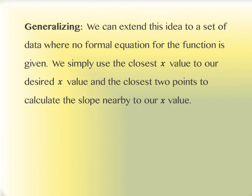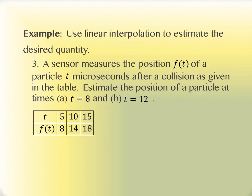Generalizing, we can extend this idea to a set of data where no formal equation for a function is given. In the last two examples we actually had a function — sin(x) or √x. We can do this for a table of values as well; this is called linear interpolation. We use the closest x value to our desired x value and the closest two points to calculate the slope nearby. Example 3 shows a table: a sensor measures the position of a particle in microseconds after a collision.